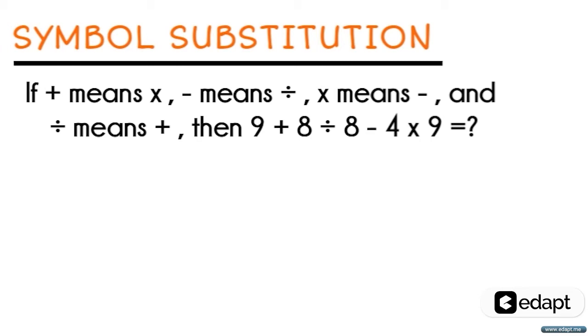According to the BODMAS rule, the addition symbol can be replaced as multiplication, so we will get 9 multiplied by 8. As division replaces addition, we will get plus 8. As subtraction means division, we will get 8 divided by 4. And finally, the multiplication replaces the subtraction, so we will get 4 minus 9.